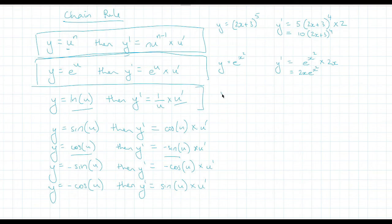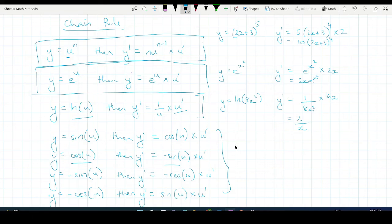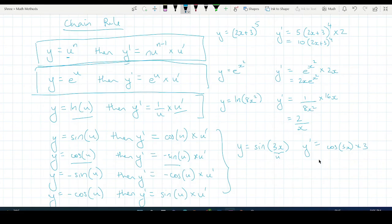Now for the ln example: if y equals ln(8x²), then y dash would be 1 over 8x² multiplied by the derivative of 8x², which is 16x. This simplifies — 16 and 8 simplify to 2, and x divided by x² simplifies to 1 over x — giving 2 over x. For the sine example: if y equals sine of 3x, that derives to cos(3x) multiplied by the derivative of 3x, which is 3, giving 3cos(3x).